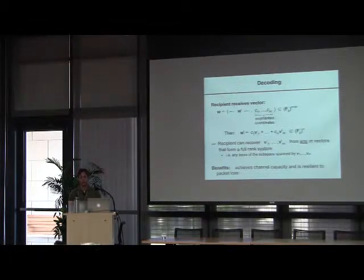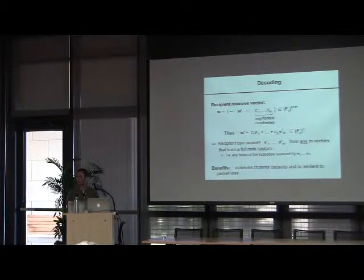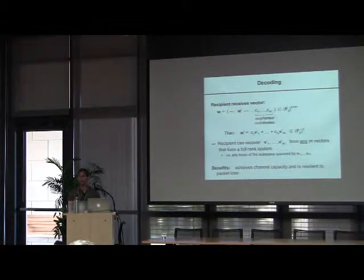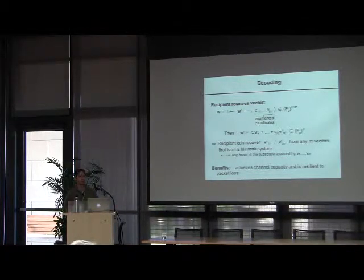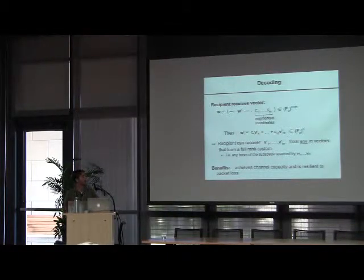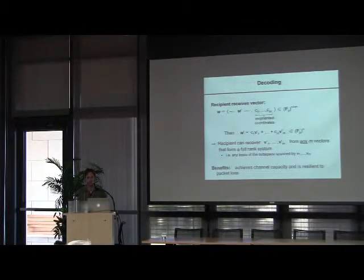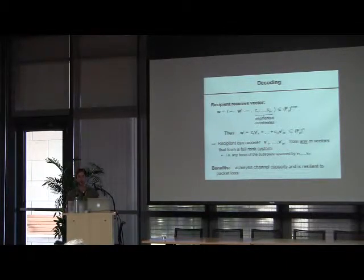To decode, the recipient receives a vector that has some data part w' and then some coefficients in the augmentation coordinates. Since we started with unit vectors, these coordinates indicate exactly which linear combination was used to make the vector w from the initial vectors — it's c_1·v_1 plus up to c_m·v_m. So if we get m vectors where the augmentation part makes a full-rank set, we can simply invert this matrix and recover the original vectors. If the ultimate recipient gets any basis of the subspace spanned by the initial vectors, it can recover the vectors.